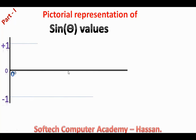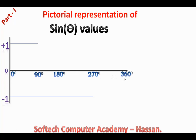The horizontal line represents the angle in degrees. This is 0 degrees, 90 degrees, 180 degrees, 270 degrees, and the last one is 360 degrees.